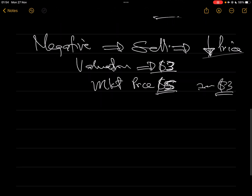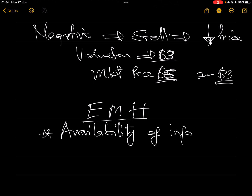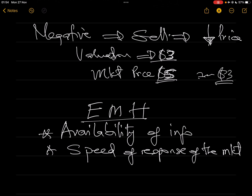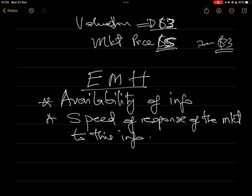Now, how is this relevant for the efficiency of the market? That is why we are talking about the Efficient Market Hypothesis. What we are actually talking about is the availability of this information — the availability of information and, when it is available, the speed of response of the market to that information. Information drives the decision of an investor whether to buy or sell a share.